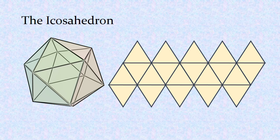Finally, the icosahedron's pattern is the most complicated of all. It consists of 20 equilateral triangles that look like this, so you would have to very carefully fold them and put them together.